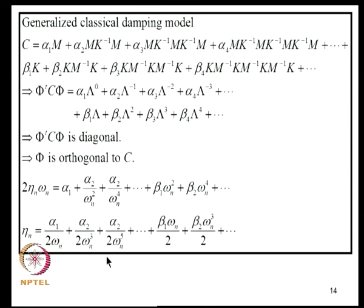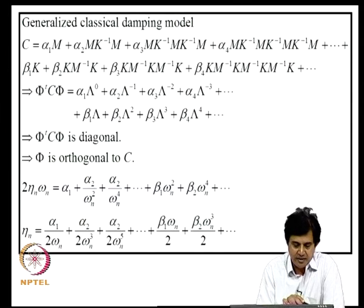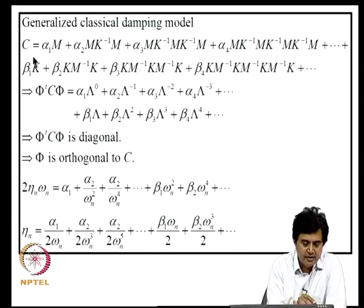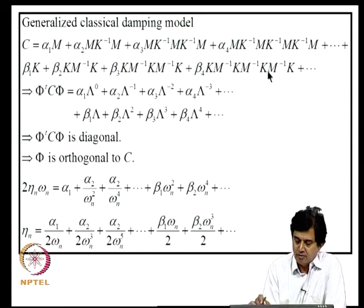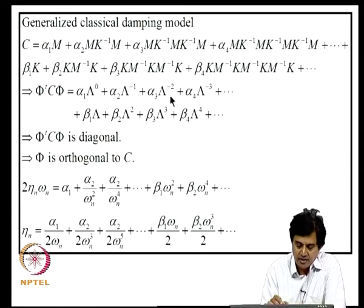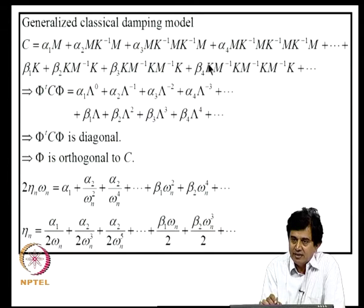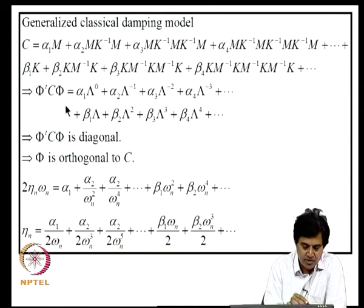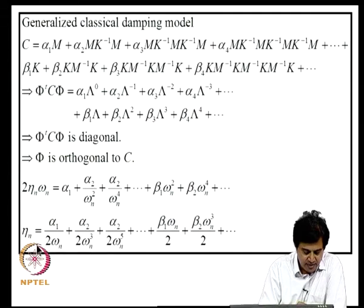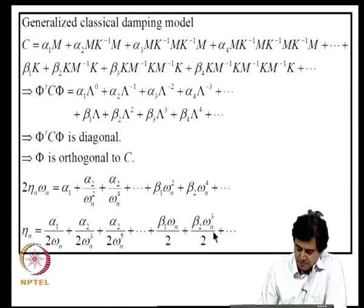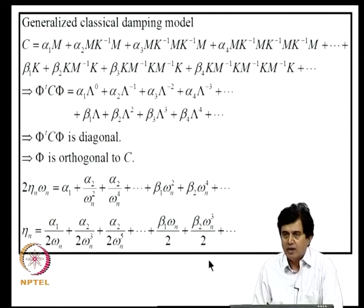We can now develop a generalized classical damping model beyond alpha·M + beta·K by using these additional orthogonality relations. C is written as a linear superposition of various combinations of K and M matrices, such as M·(M-inverse·K)^n terms. Using this expansion, Phi-transpose·C·Phi remains diagonal with this form. We now have as many model parameters as desirable, and the damping ratio eta_N as a function of omega_N takes a more flexible form with newly introduced terms compared to the two-parameter Rayleigh model.